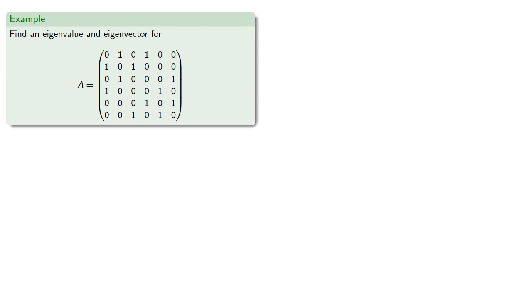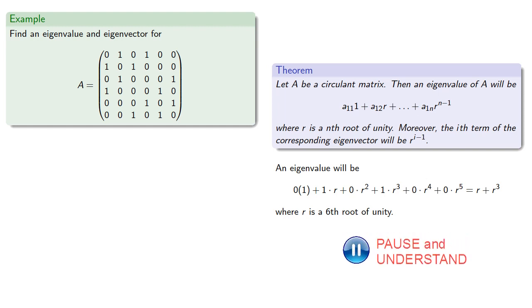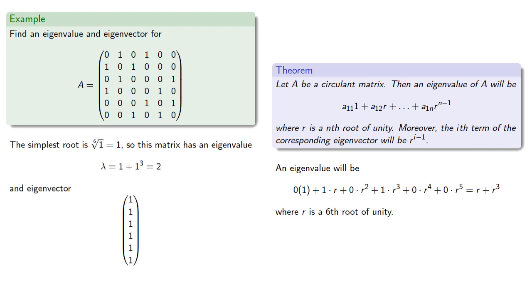So let's try to find an eigenvalue and eigenvector for this matrix. So our theorem says that an eigenvalue will have the form where r is a sixth root of unity. Now the simplest root, the sixth root of 1, is just 1. So this matrix has an eigenvalue lambda equals 2. And our eigenvector will consist of the powers of 1, which will just be all ones.